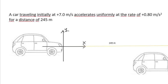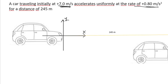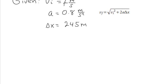The question is: what is the final velocity after traveling this distance? In my problem, the initial velocity is 7 meters per second. At a rate of 0.80 — remember, rate of change of velocity is acceleration — so 0.80 meters per second squared is my acceleration. And finally, I have the displacement of 245 meters. We can use the same formula.